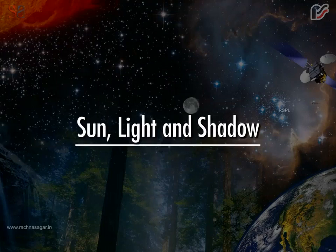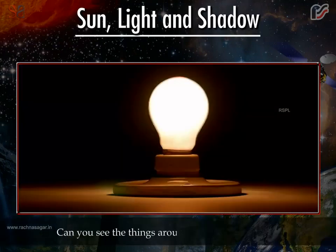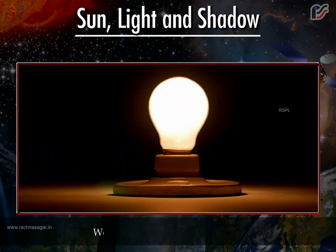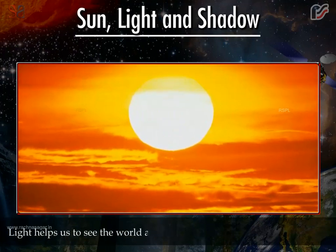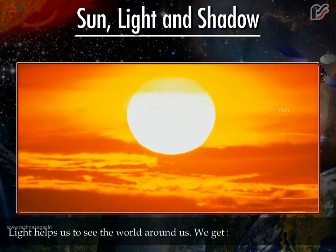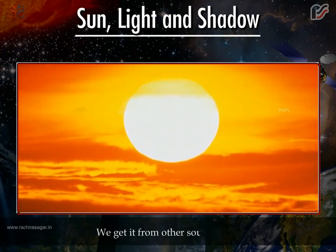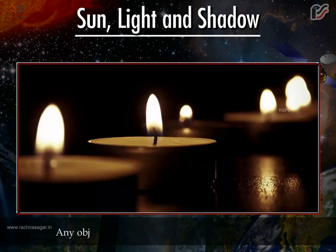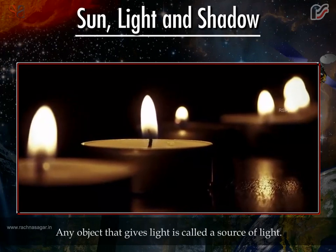Sun, Light and Shadow. Can you see the things around you in the dark? No. We can see things only in light. Light helps us to see the world around us. We get it directly from the sun. We get it from other sources also. Any object that gives light is called a source of light.